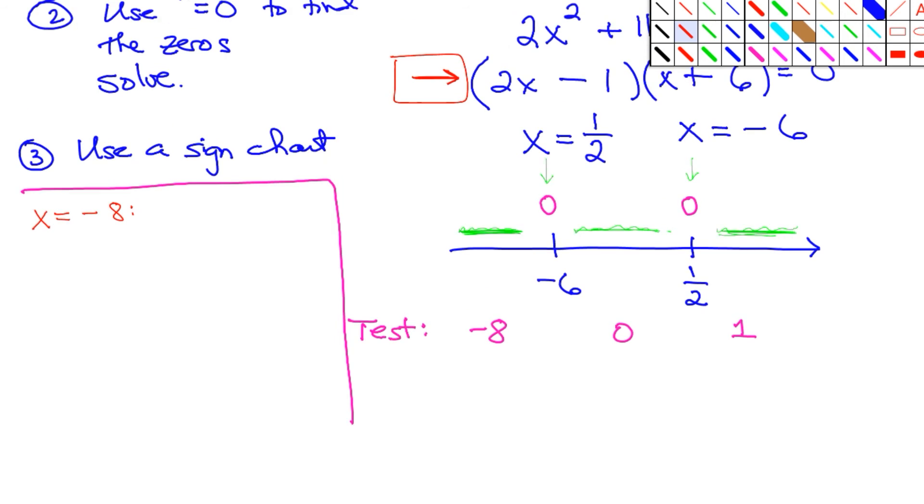So when I test -8, I get (2(-8) - 1)(-8 + 6). We are not looking for the exact values here. All I really need to know is what the signs are. The sign of this first one would be 2 times -8 minus 1 is negative. And -8 plus 6 is also negative. A negative times a negative is a positive. So on the first interval, all of these values are positive.